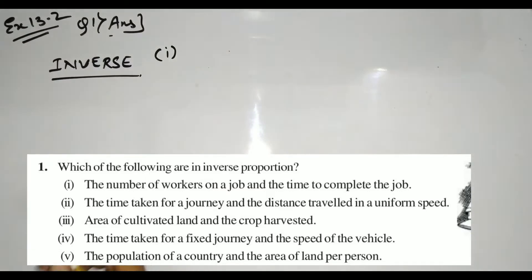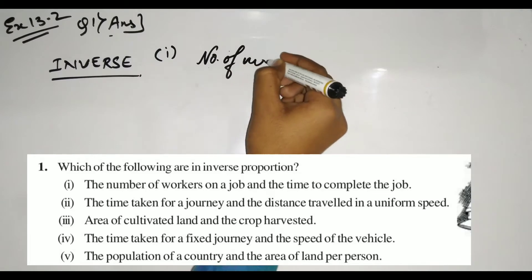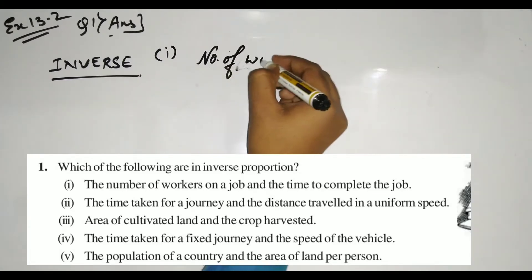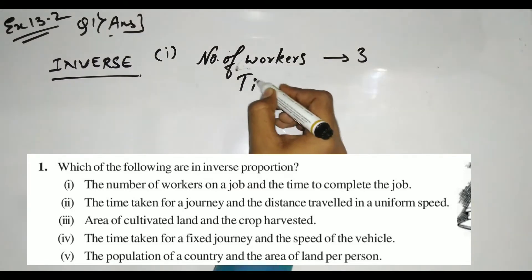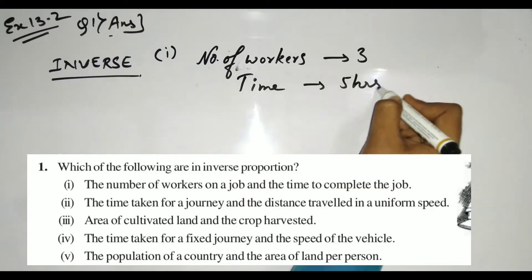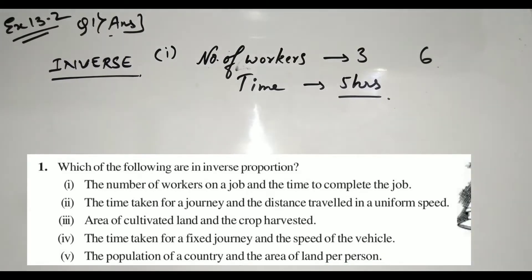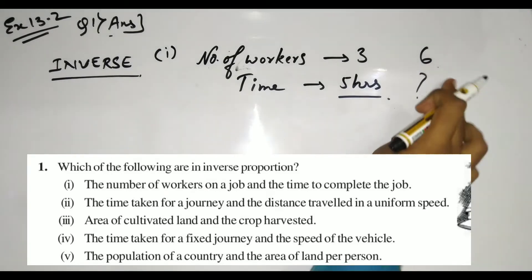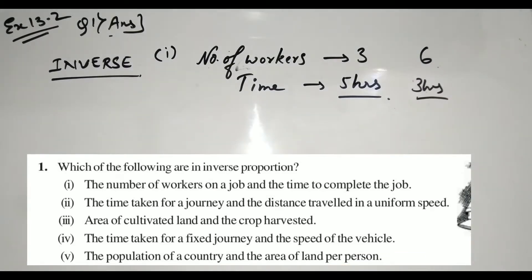In the first part, it is given: the number of workers on a job and the time to complete the job. Suppose we take 3 workers taking 5 hours for a certain job. If I increase the workers to 6, the time will decrease — suppose it becomes around 3 hours.